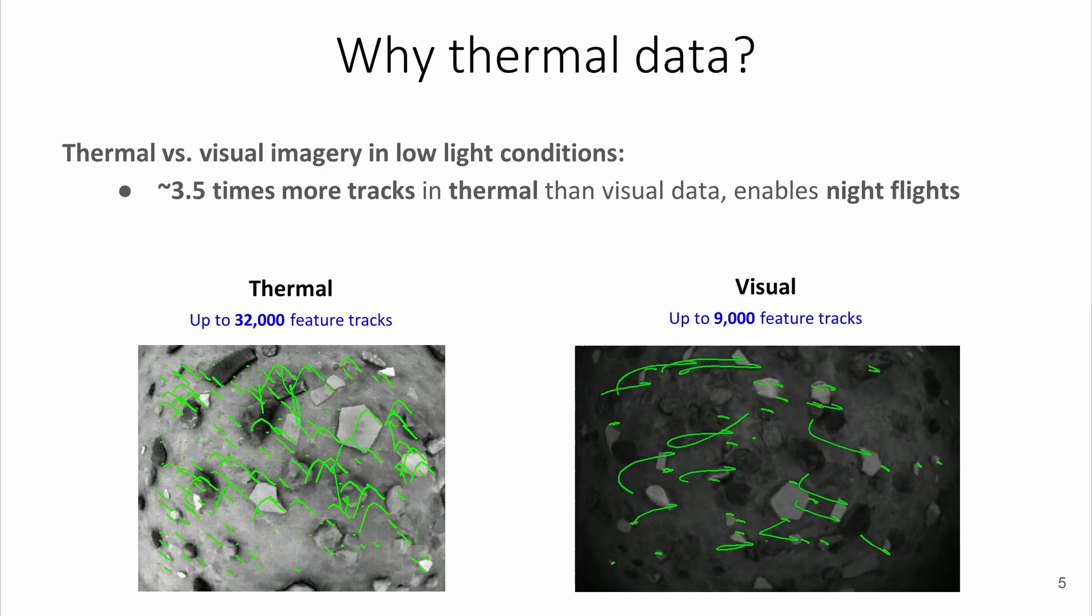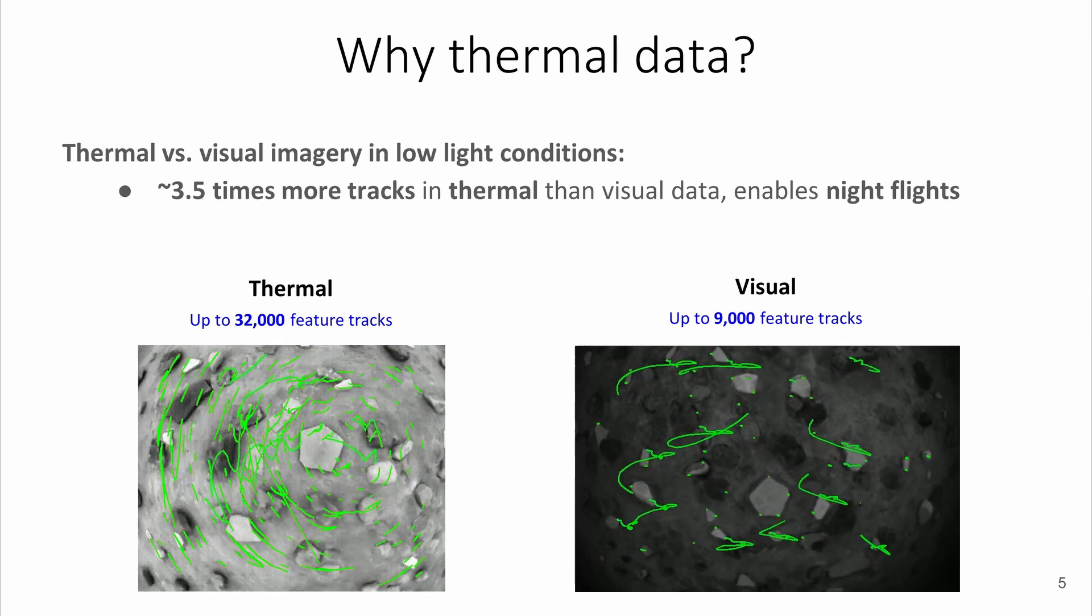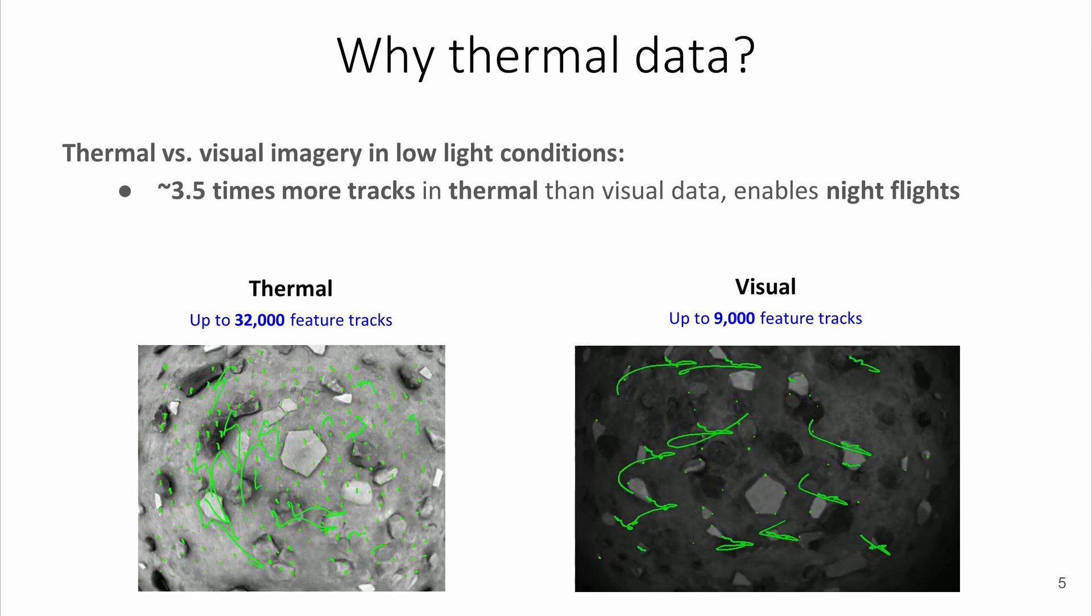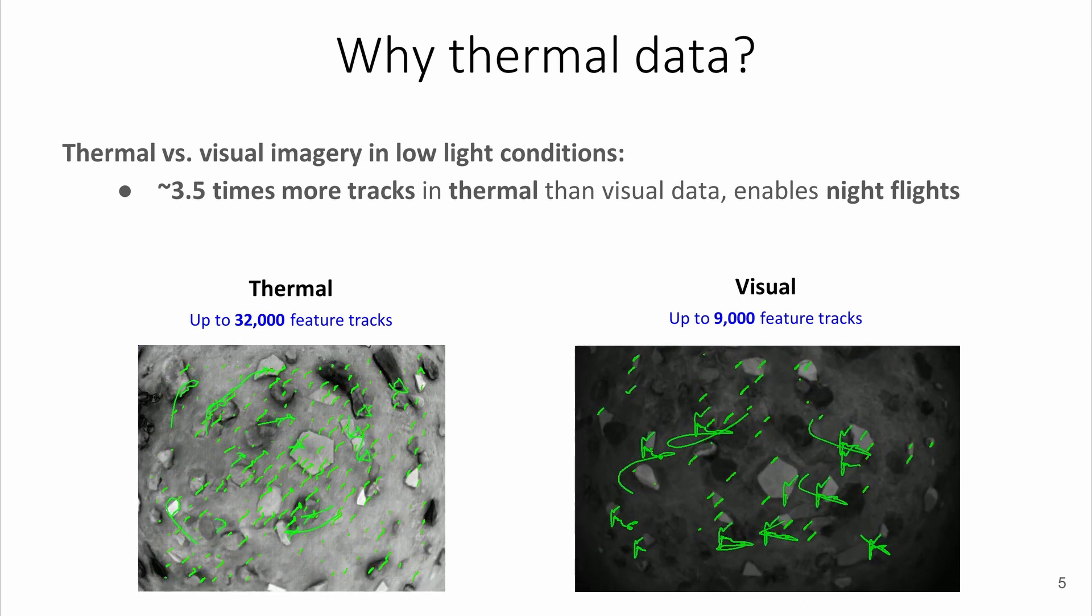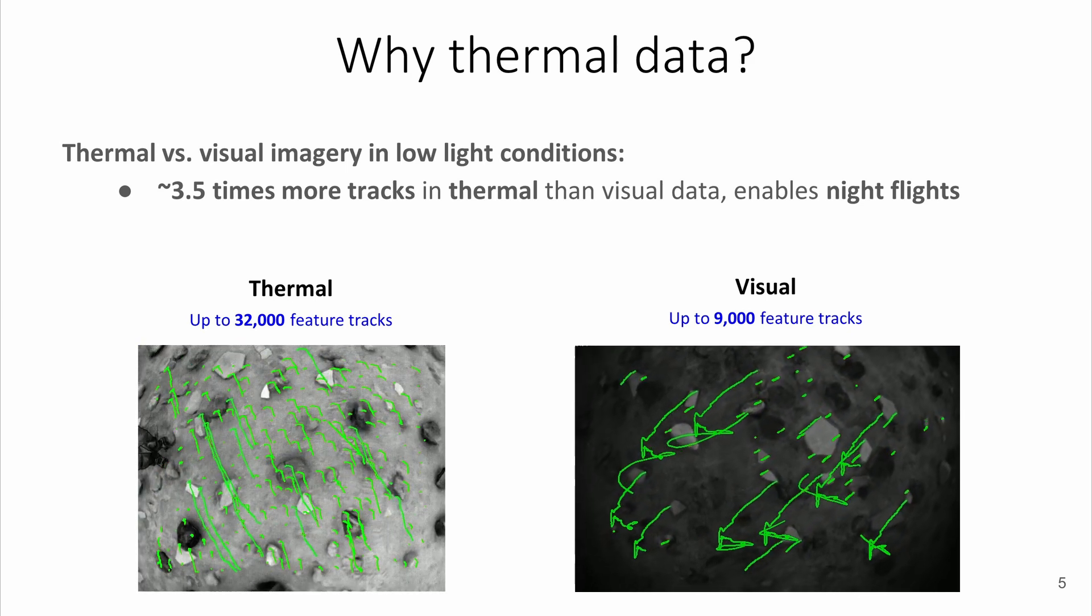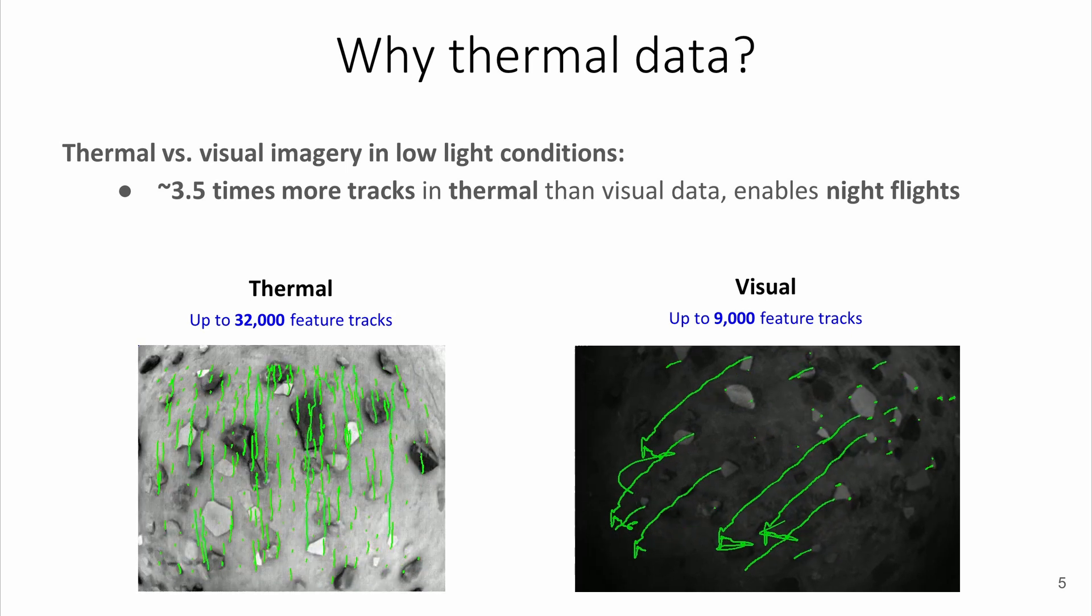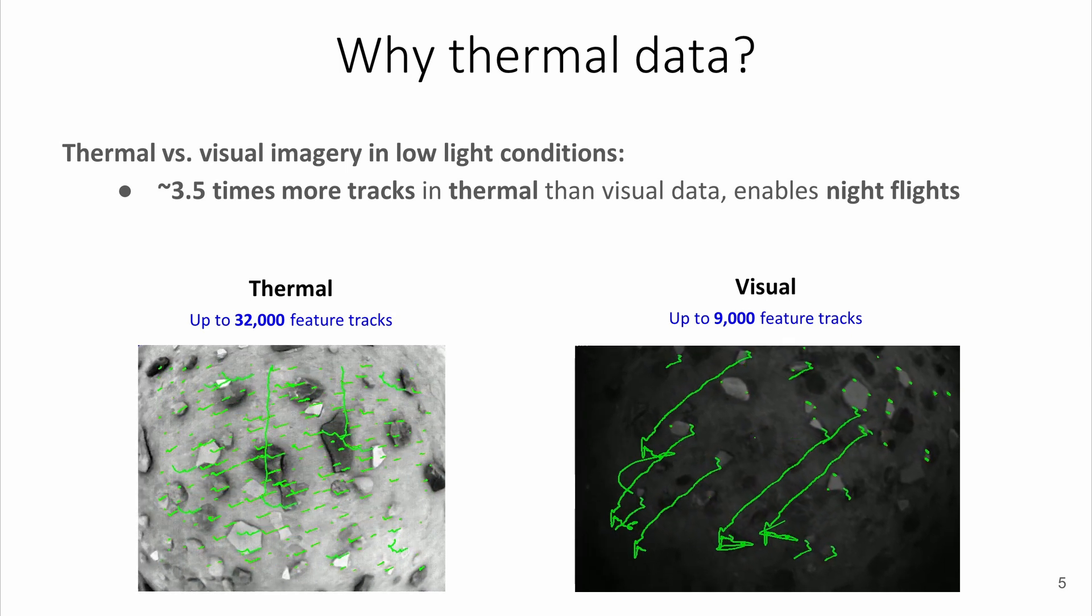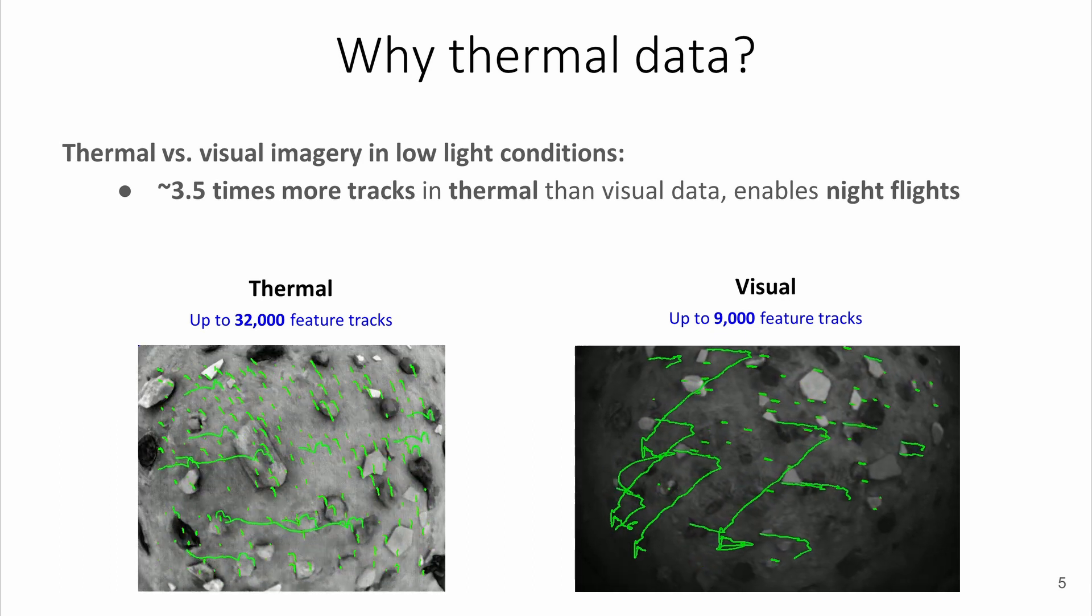Recent advances in thermal camera development have made these sensors more affordable with higher quality and modest power consumption, drawing considerable attention from the computer vision research community. Thermal cameras allow autonomous agents to operate in all types of light conditions without the need for an external lighting source. We managed to track more than 3.5 times more fast corners than visual data in low-light scenes.